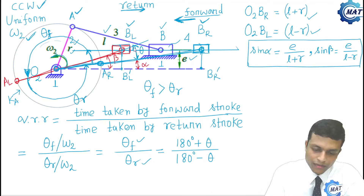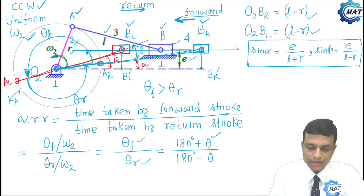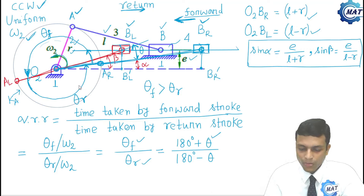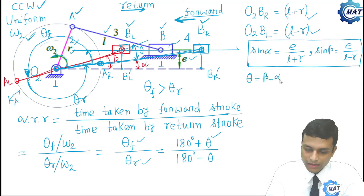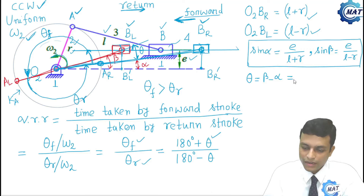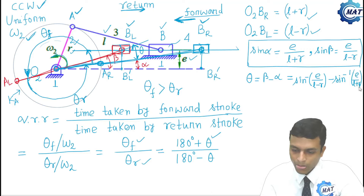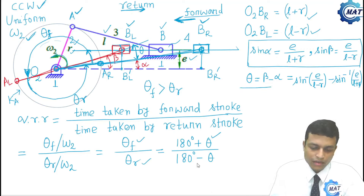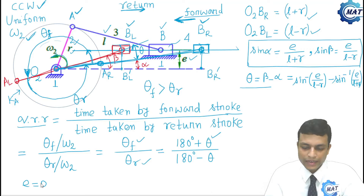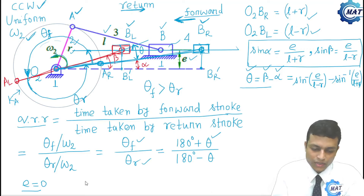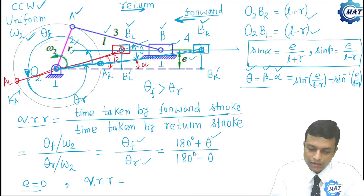The difference between beta and alpha is theta. If we can calculate theta, we can easily calculate the quick return ratio. Theta equals beta minus alpha, which equals sin inverse(E / (L minus R)) minus sin inverse(E / (L plus R)). When E equals 0, that is a simple slider crank mechanism with no offset, alpha and beta both become 0, so theta equals 0, and the quick return ratio becomes 180 divided by 180, which equals 1 — meaning no quick return effect.